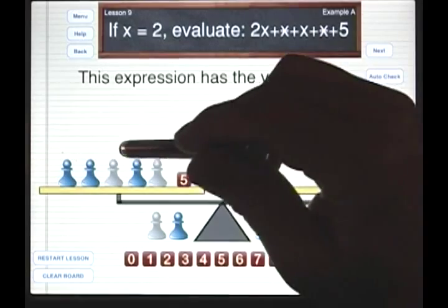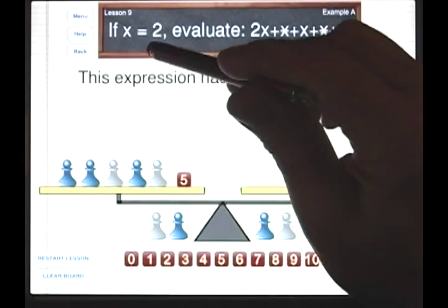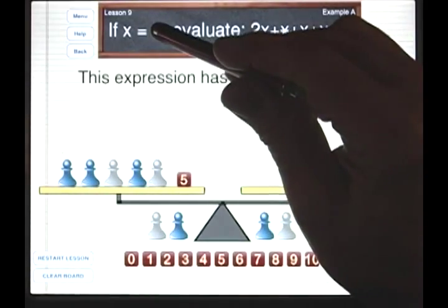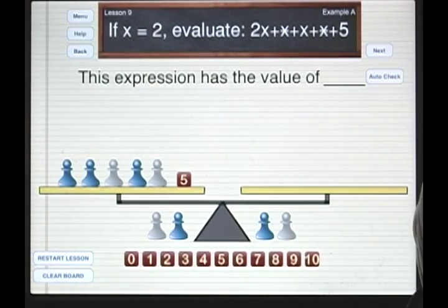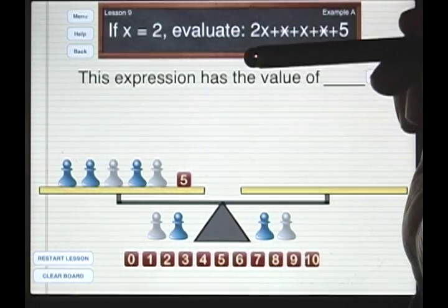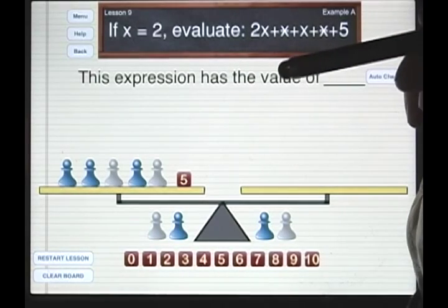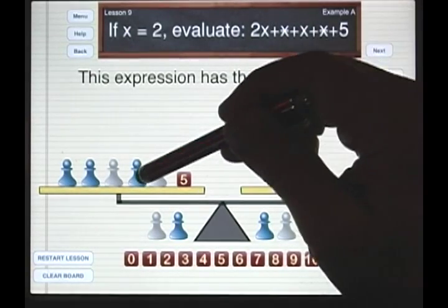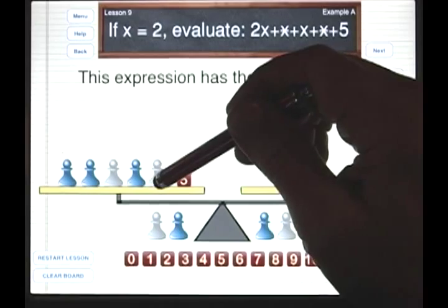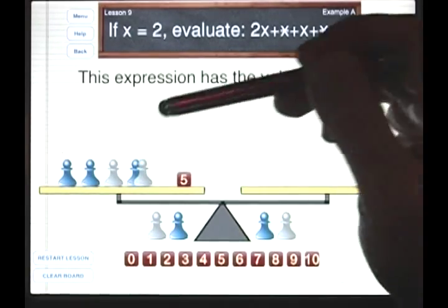So we need to figure out the value of this expression. We're given that x is equal to 2, but we're not told anything about star. So we need to learn that in any given problem, x and star are always opposite. So if this x is 2, this star is negative 2, and together they're worth 0.